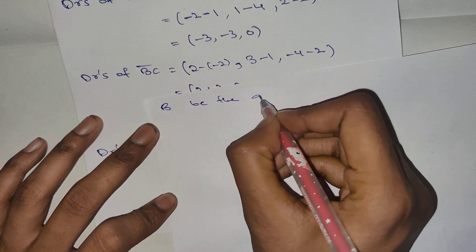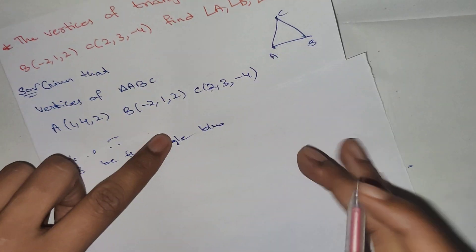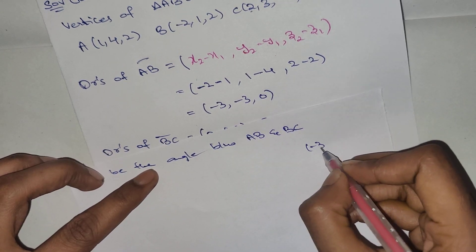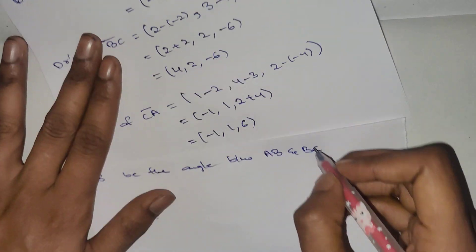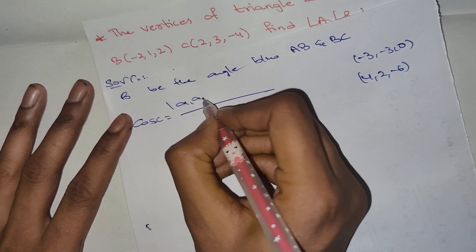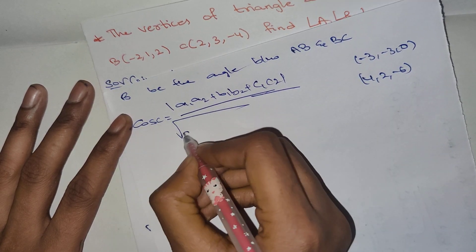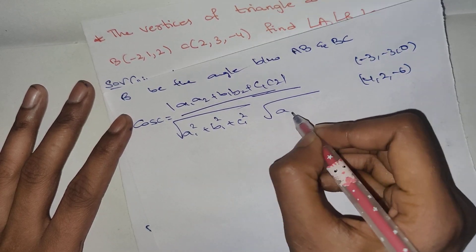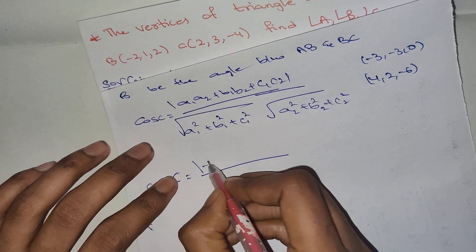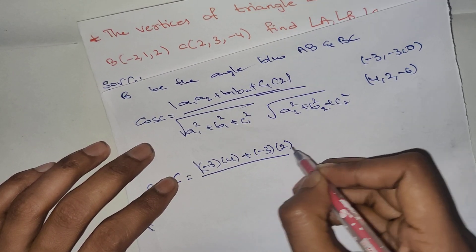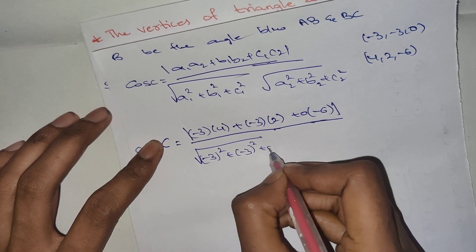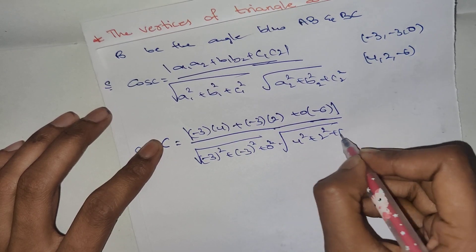For angle B — the angle between AB and BC — using AB values minus 3, minus 3, 0 and BC values 4, 2, minus 6: cos C equals A1·A2 plus B1·B2 plus C1·C2, divided by the square root of A1 squared plus B1 squared plus C1 squared, into the square root of A2 squared plus B2 squared plus C2 squared.